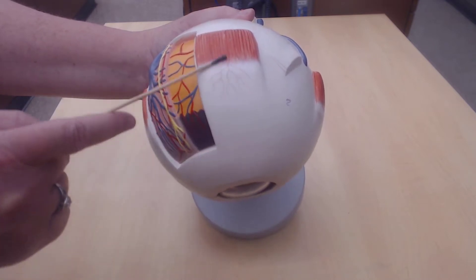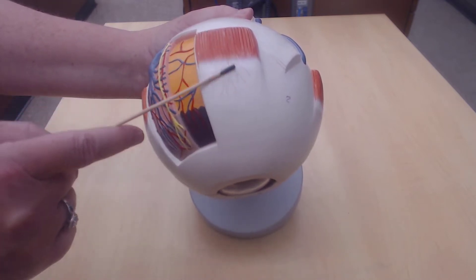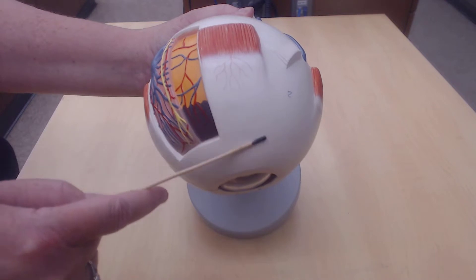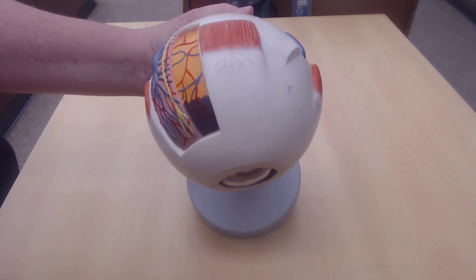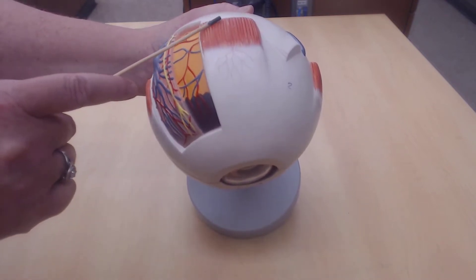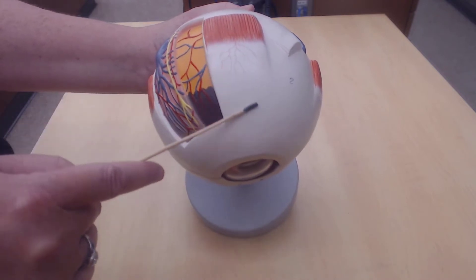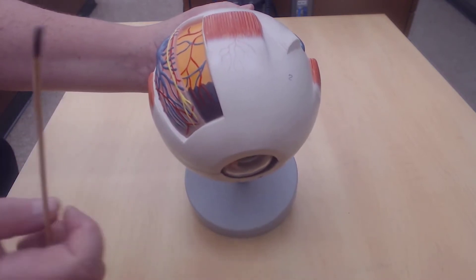This is the superior rectus muscle. When this contracts, the eye looks upward, looks superior. Superior rectus muscle allows the eye to move superior, to look up.